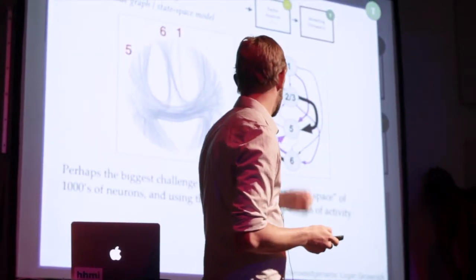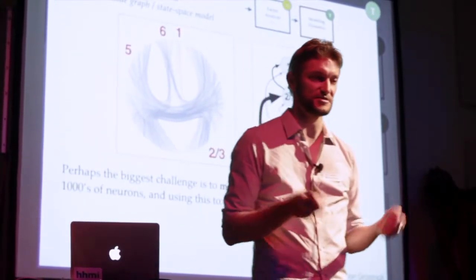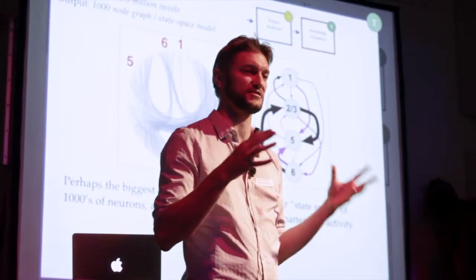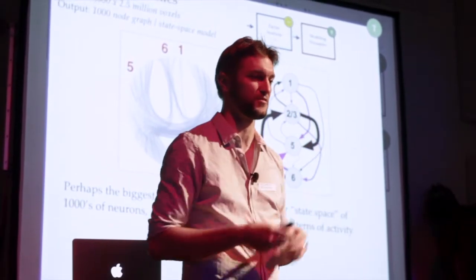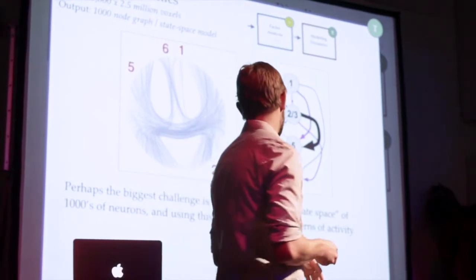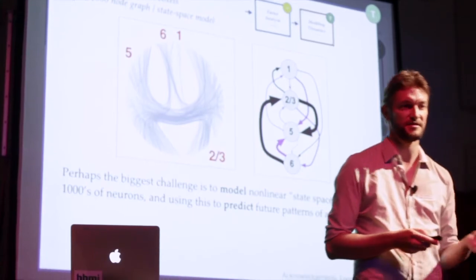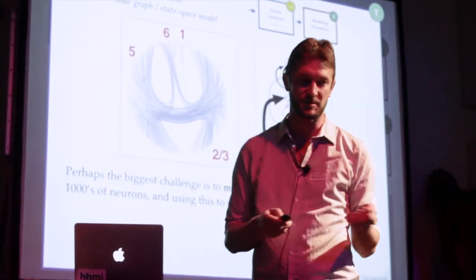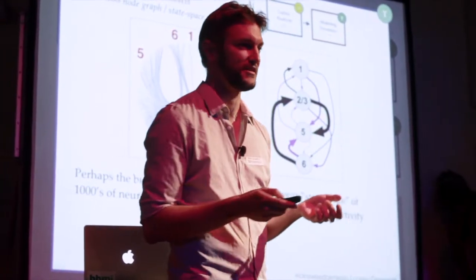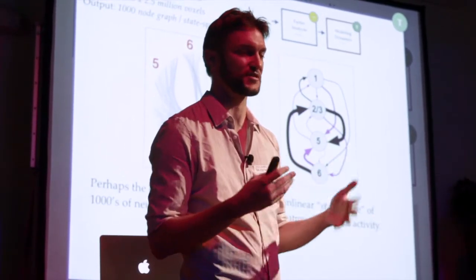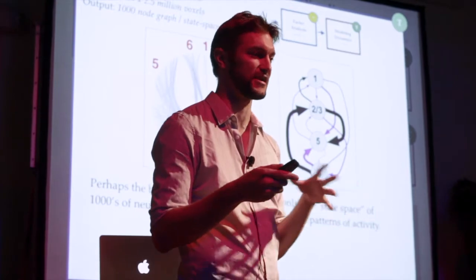And then you get to what is perhaps the biggest challenge, which is to use these time series and try to model this weird nonlinear state space that is the brain or a particular circuit in the brain. And if you do this correctly, you should be able to predict the pattern of activity that you might be able to see in the brain. And that would be truly beginning to understand how this circuit is functioning. How do these one thousand neurons interact with each other?